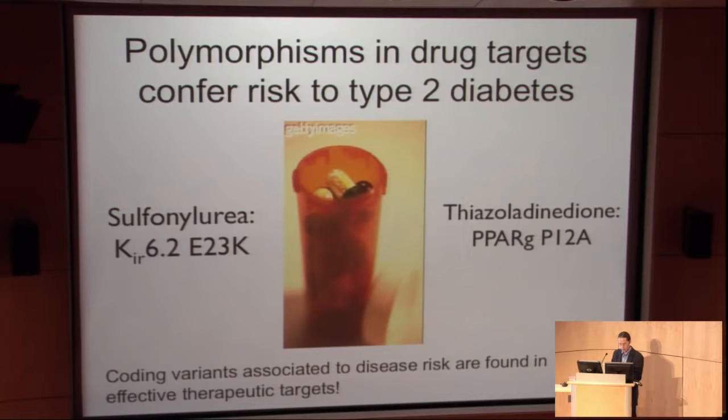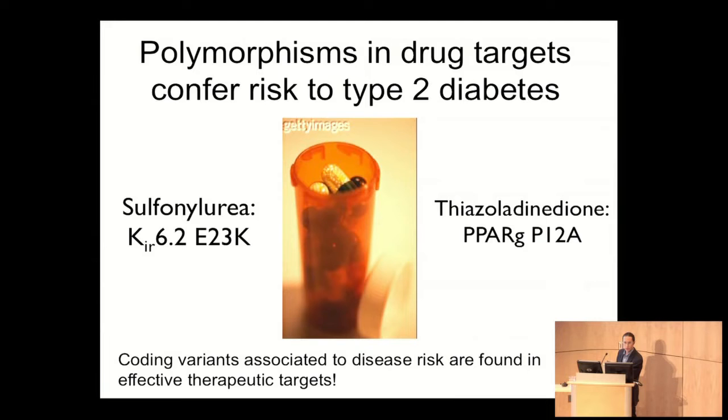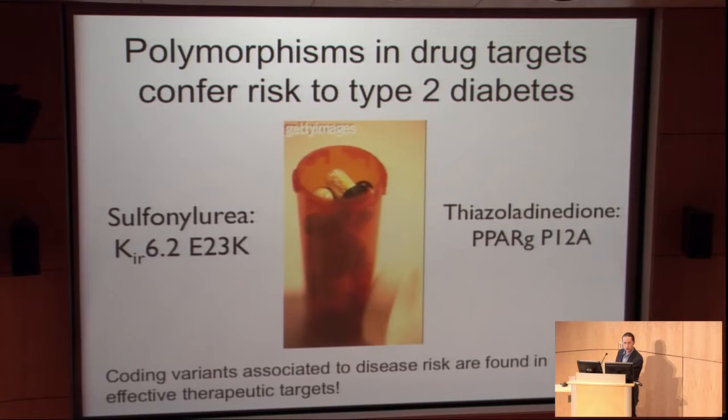So how does human genetic variation matter? I often like to start out this lecture by pointing out examples where human genetic variation influences a medical phenotype of interest. For example, polymorphisms in drug targets that are effectively treated by type 2 diabetes — the sulfonylureas and thiazolidinediones. These genes are effective drug targets for diabetes, but they also harbor genetic risk for diabetes. Not surprisingly, when we discover genes relevant to a disease, they may prove to be effective therapeutic targets.